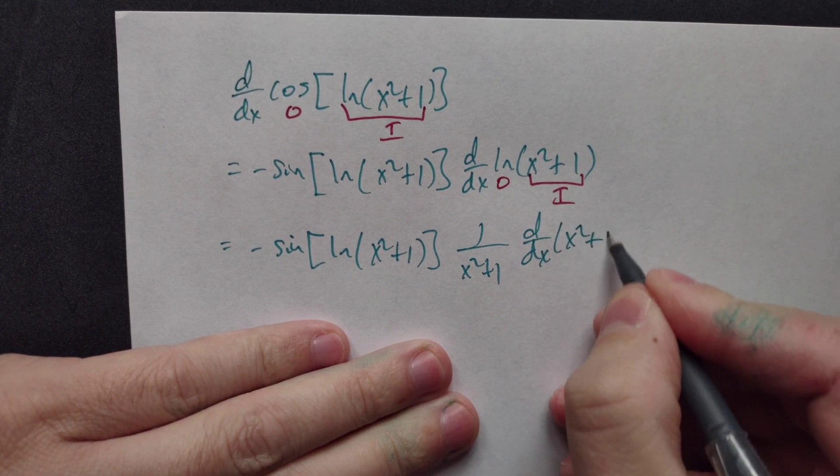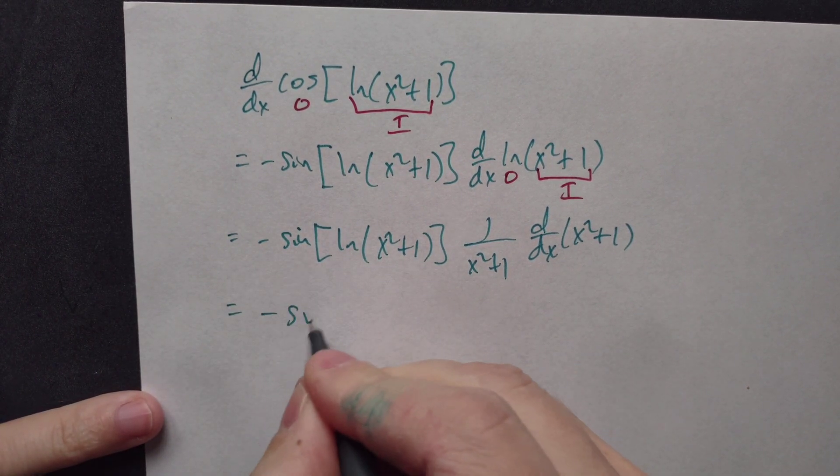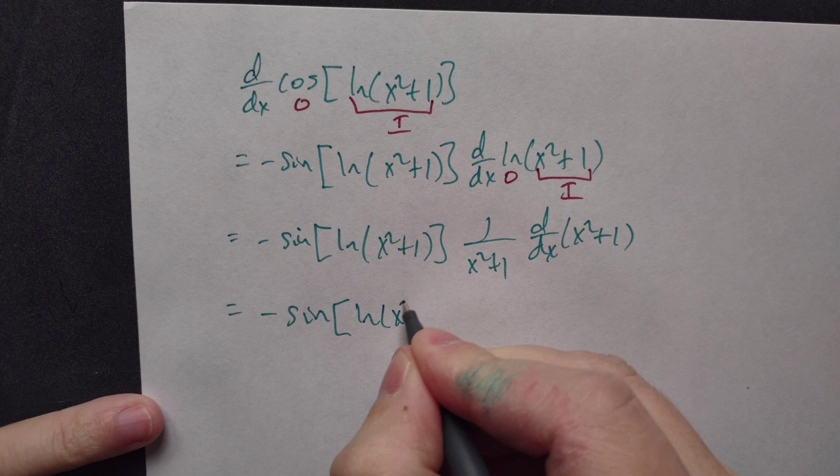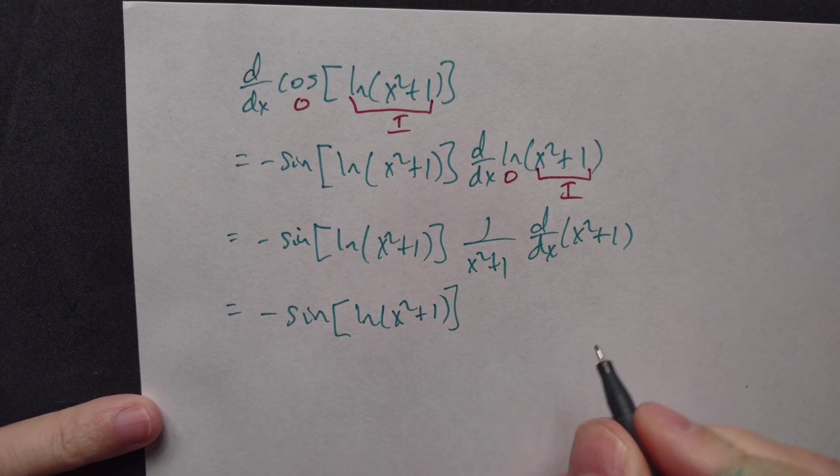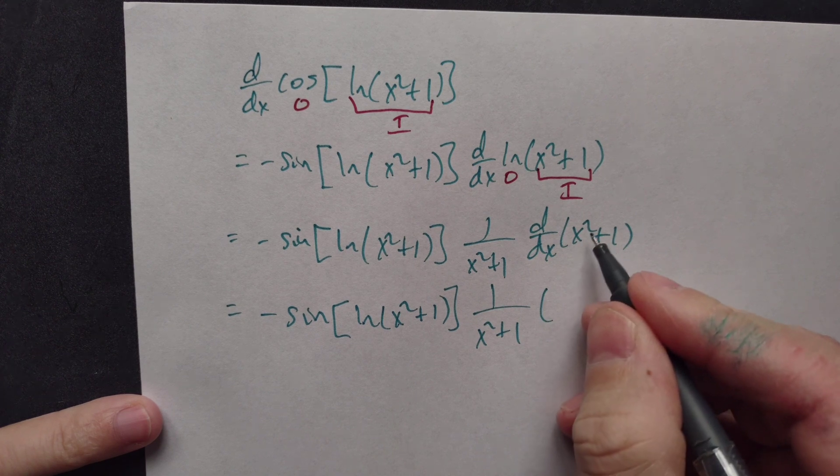Then you continue with this. Again, copy negative sign, bracket ln of x squared plus one, close bracket, one over x squared plus one. By the power rule, x squared is two x differentiated. The derivative of one as a constant is zero, so you have this.